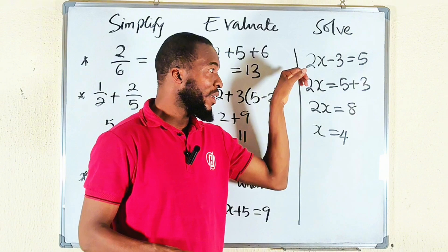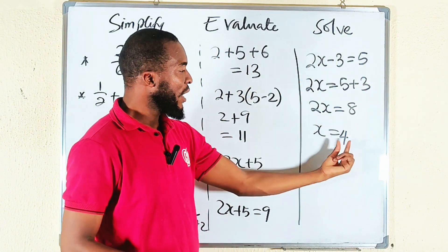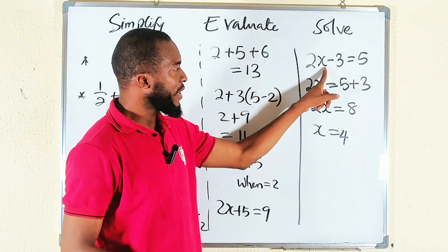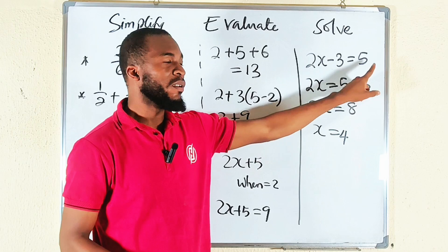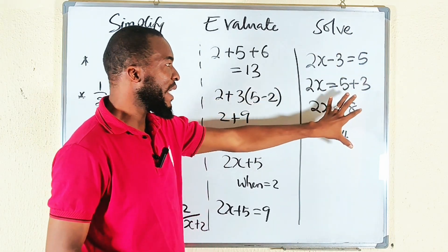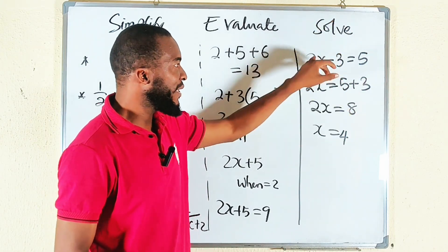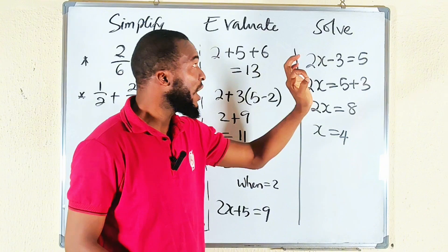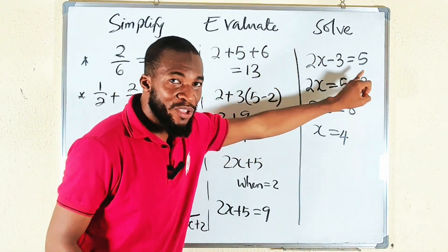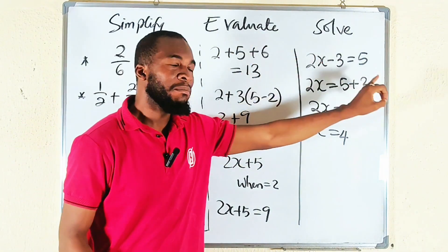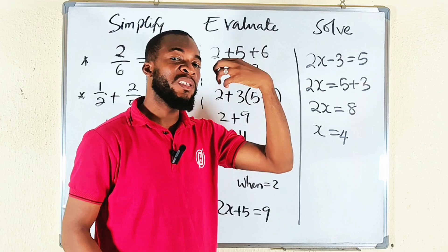And if you take it and plug it back: 2 times 4 is 8, and 8 minus 3 is 5. So what you did here is solving—you solve the equation. You only solve equations. You don't evaluate equations, you don't simplify them, but you may carry out some simplifications in equations.